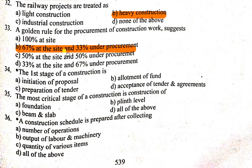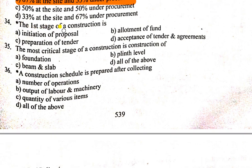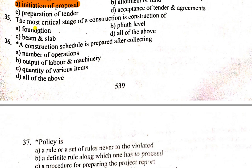Question number 34: The first stage of construction — options are: initiating of proposal, allotment of fund, preparation of tender, and acceptance of tender. The first stage of any construction is the initiating of proposal.